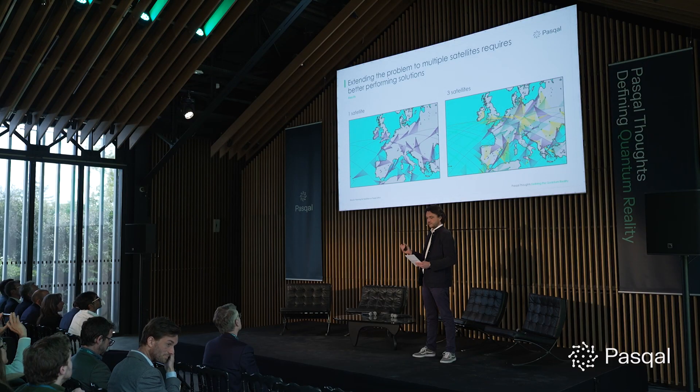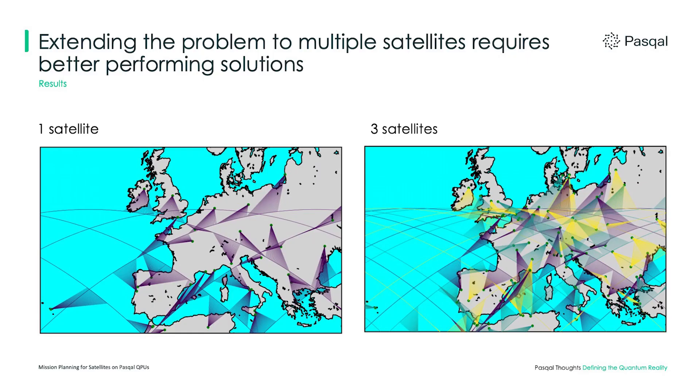In addition to all these constraints, the complexity of the problem also grows with the number of satellites we take into account. We can see here the difference between one and three satellites flying over the same region — the number of data-take opportunities with three satellites is much higher, so we're able to cover the region much better, but this comes at the cost of more complex calculations because more decisions need to be made.